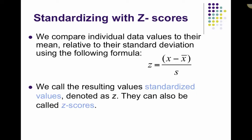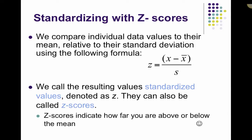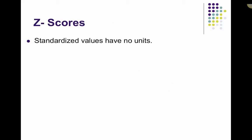Again, we call the resulting values standardized values, noted as z because it's representing our z-score. So what a z-score does is it indicates how far you are above or below the mean. z-scores, which are standardized values, have no units. Essentially, you're using standard deviations as your units, but a z-score is considered unitless.